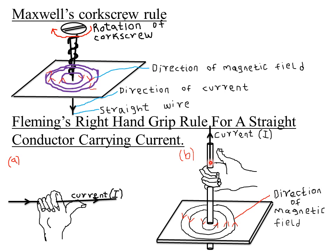If you hold a nail and assume the current is flowing upward through it, align your thumb in the direction of the current — the thumb is the broader finger. Grasp the conductor such that the thumb is pointing along the direction of the current, then the direction of curling of the fingers is the direction of the magnetic field.